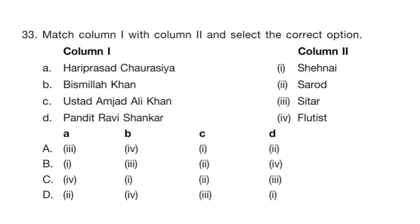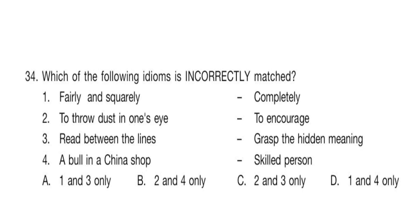Question 33. Match column 1 with column 2 and select the correct option. The correct answer is option C. Question 34. Which of the following idioms is incorrectly matched? The correct answer is option B: 2 and 4 only.